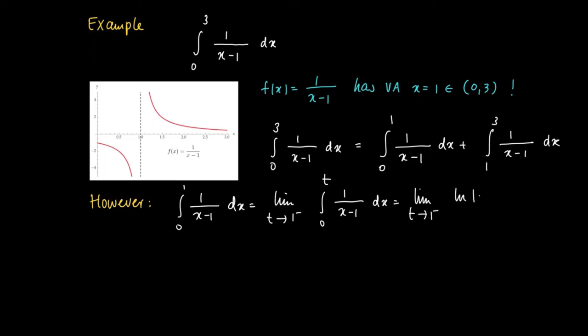And it's easy to compute the primitive of 1 over x minus 1. And now we have to care for the absolute values of x minus 1. So we get, as a primitive, the ln of the absolute value of x minus 1.